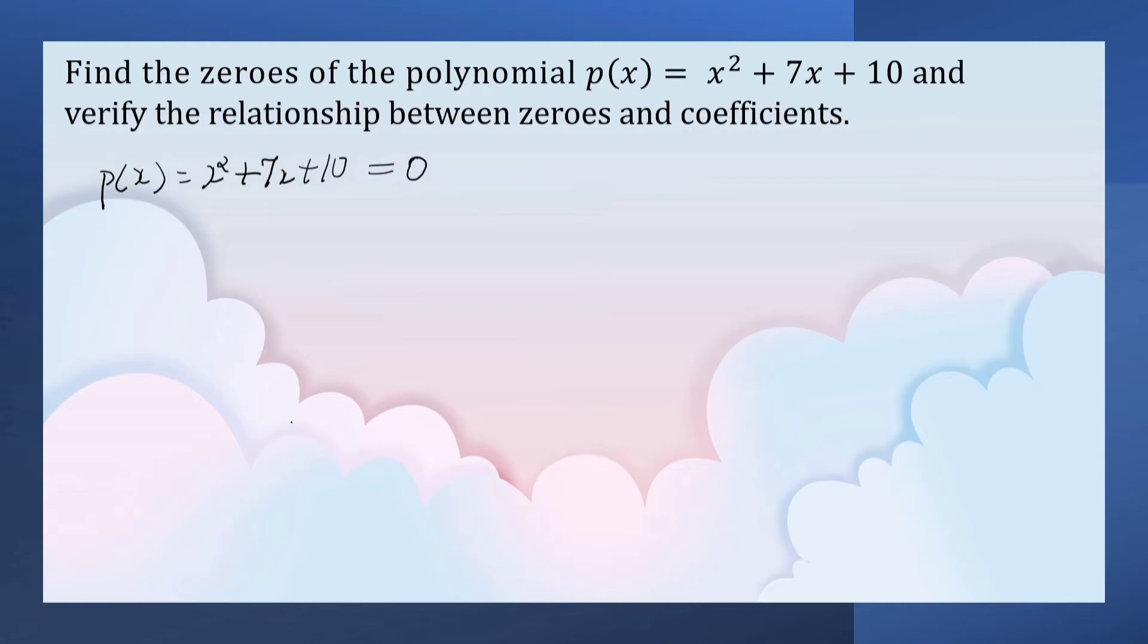Since it is a quadratic polynomial, split the middle term such that sum of it gives 7x and the product gives 10. x² + 5x + 2x + 10. 5 into 2 is 10, 5 plus 2 is 7, equals 0.